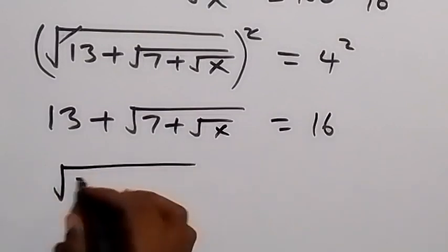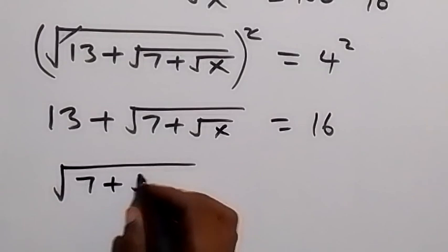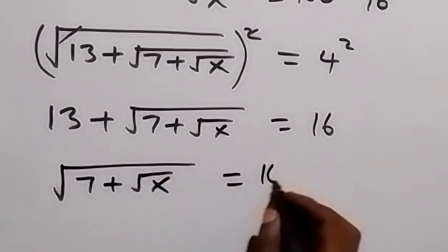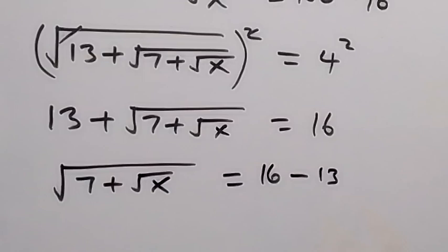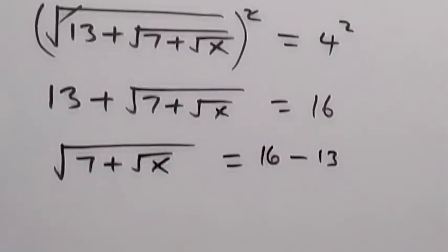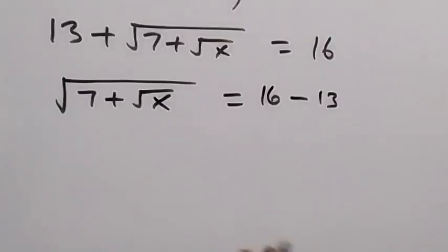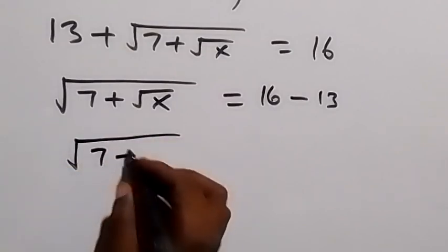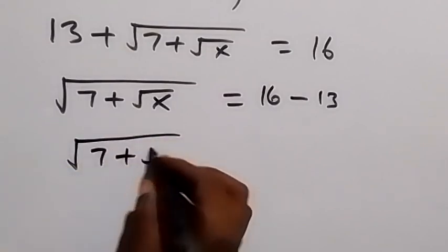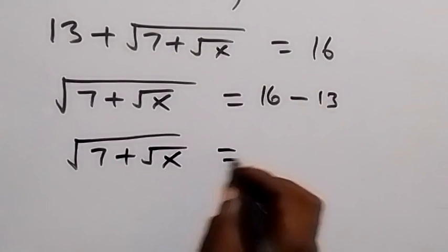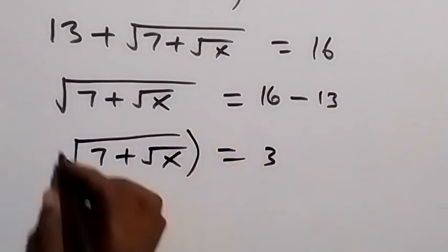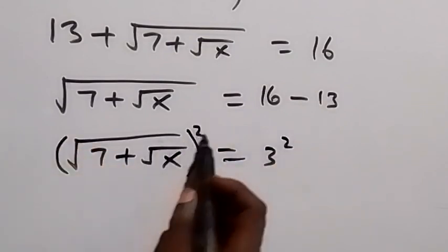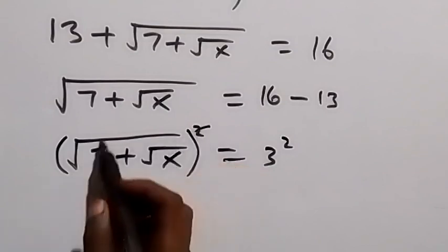So we have square root of 7 plus square root of x, equals 16 minus 13. And 16 minus 13 gives us 3. So we have square root of 7 plus square root of x equals 3. Then we square both sides again in order to remove the square root.